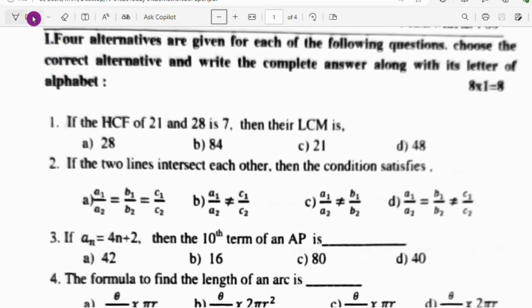Four alternatives are given for each of the following questions. Choose the correct alternative and write the complete answer along with its letter of alphabet. Question number one: If the HCF of 21 and 28 is 7, then their LCM is. If you calculate, the answer is 84, option B is the right answer.